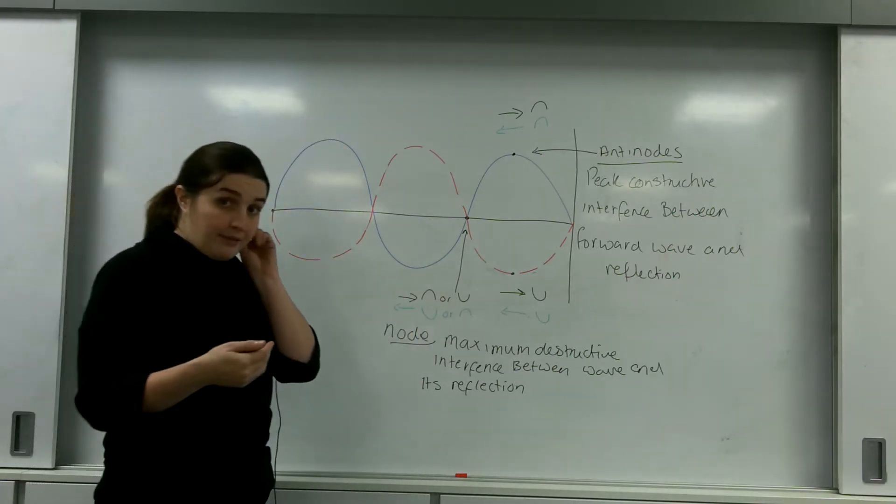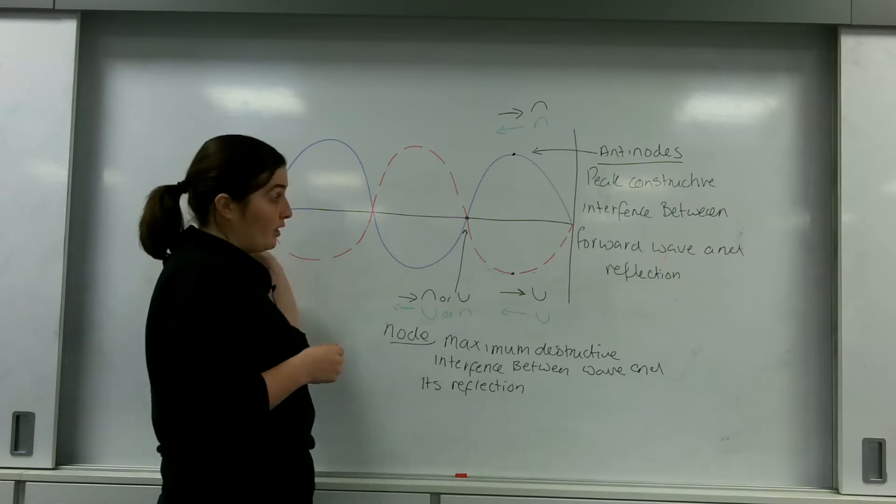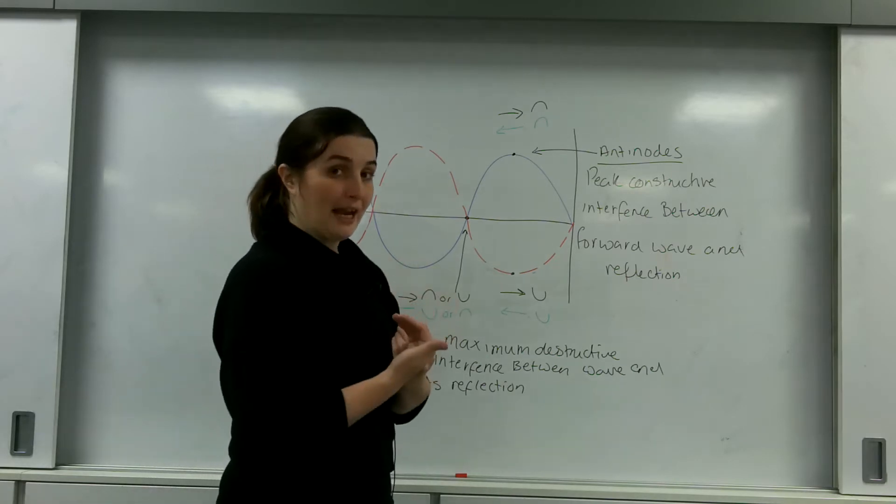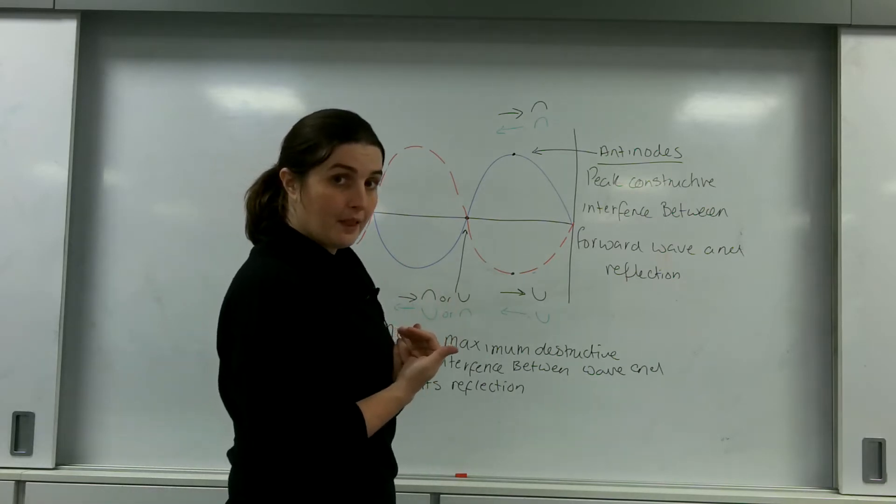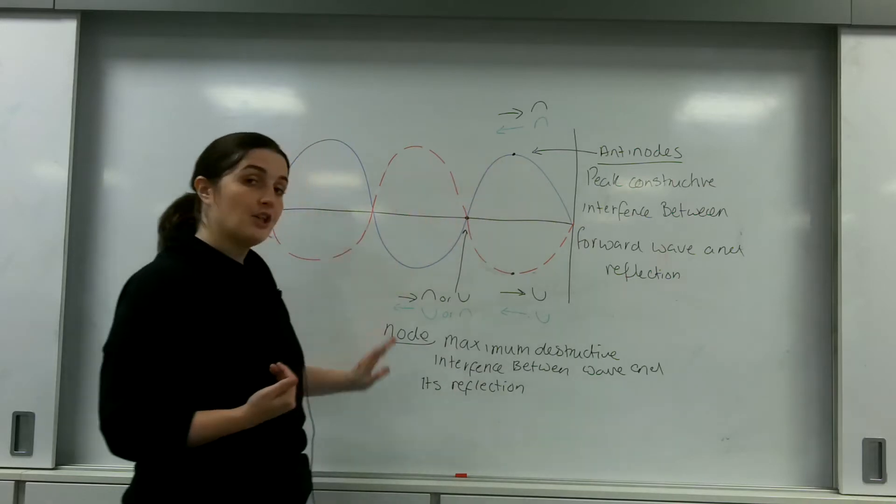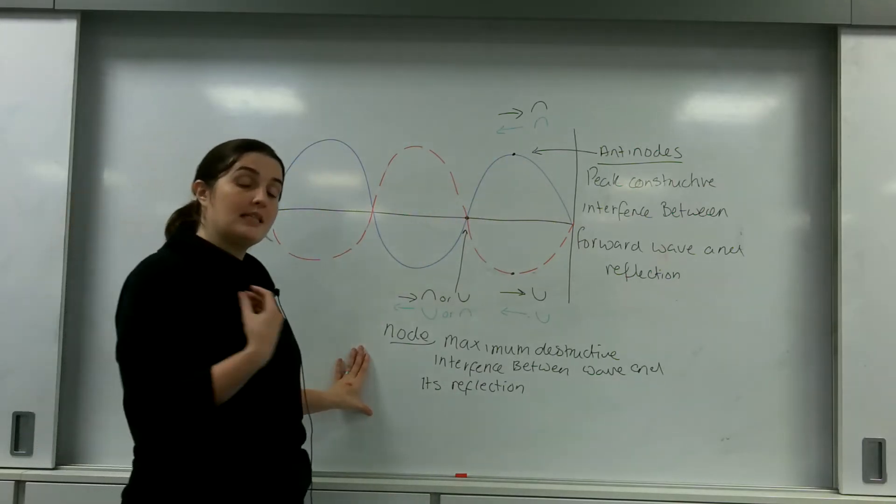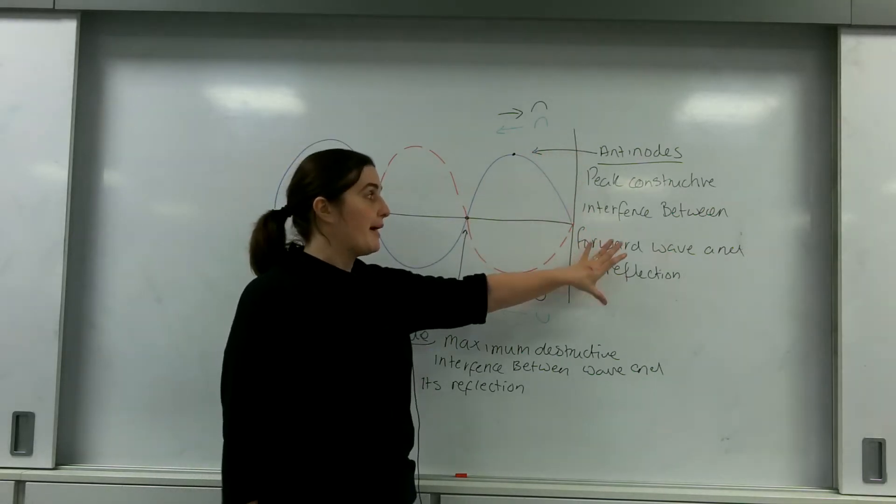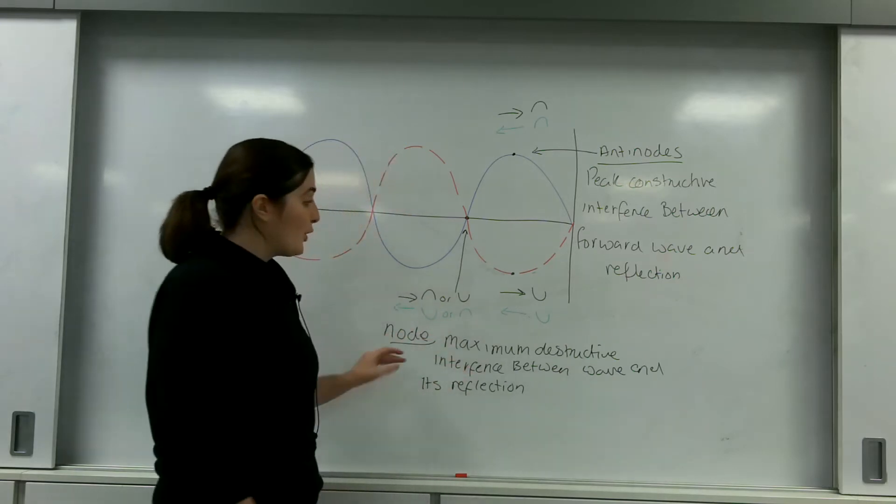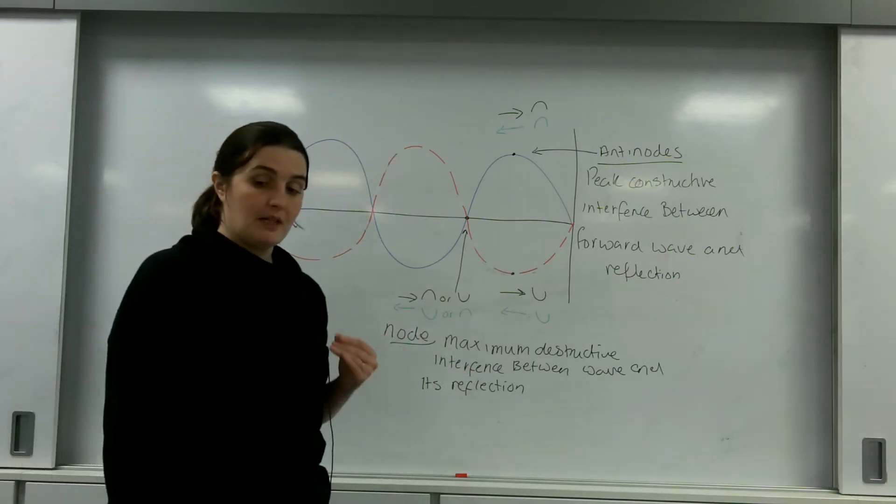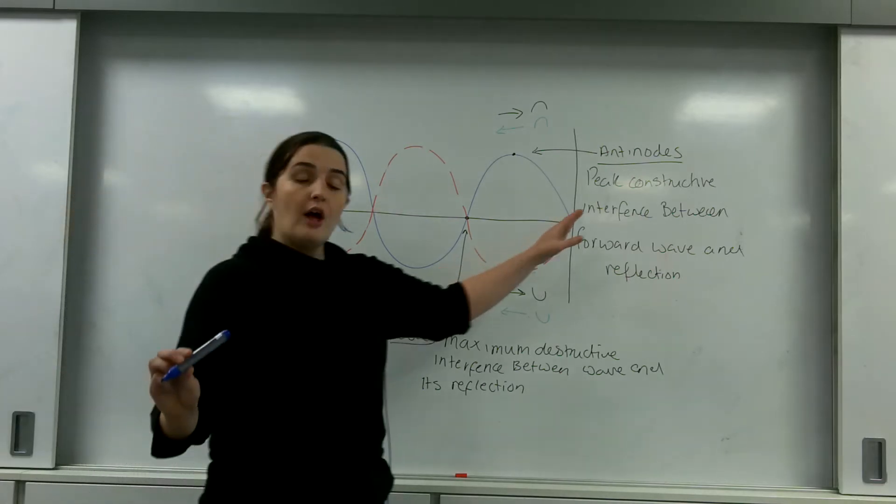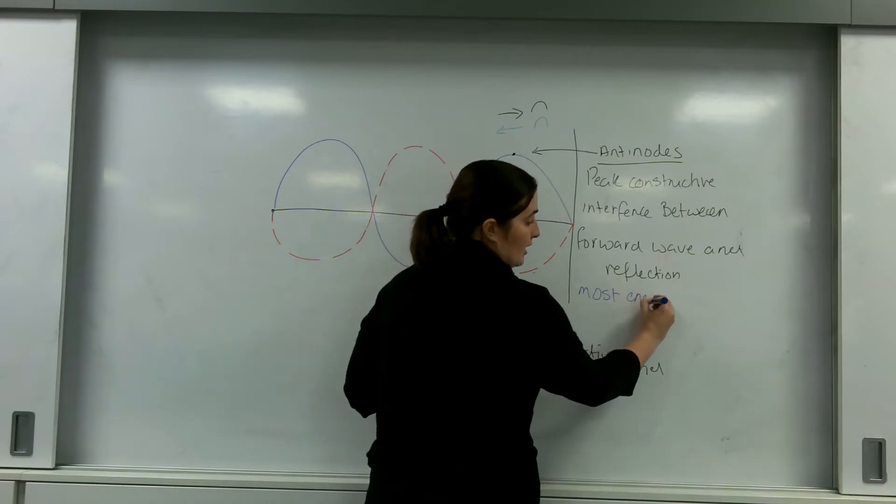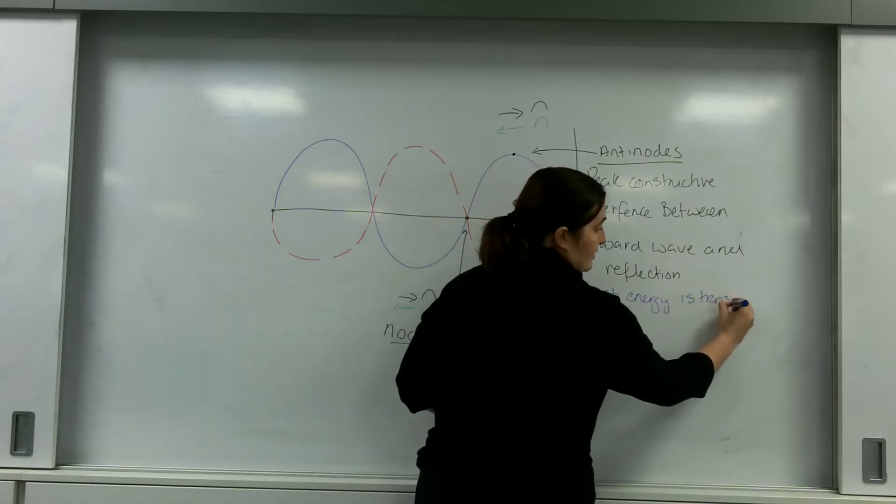So a standing wave is literally a wave being reflected back and interfering with its reflection. You have antinodes and it's really important in the exam to make a clear point about the antinode is where you get maximum constructive interference and a node is maximum destructive interference. An antinode is where the most energy is transferred.